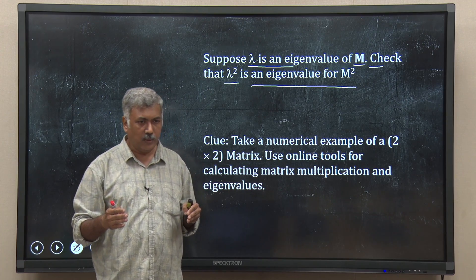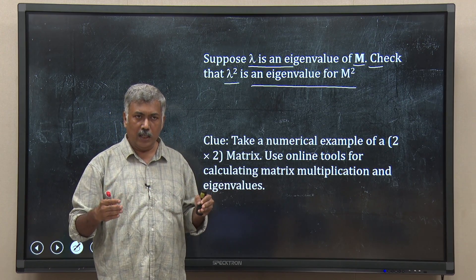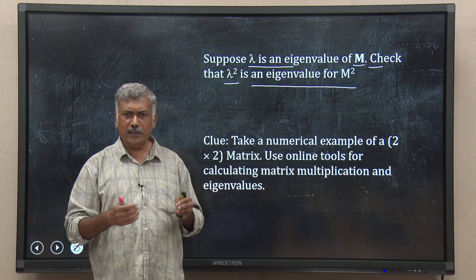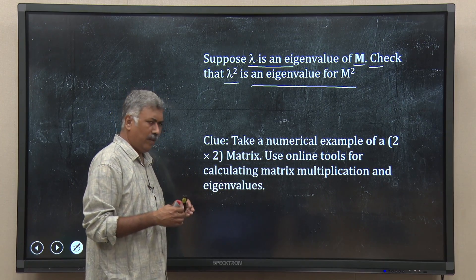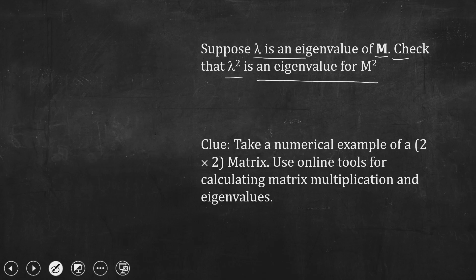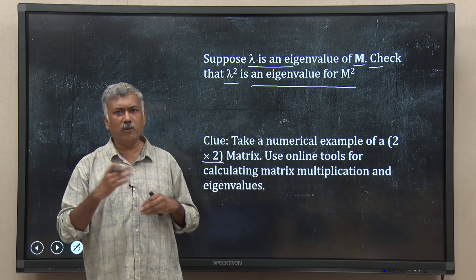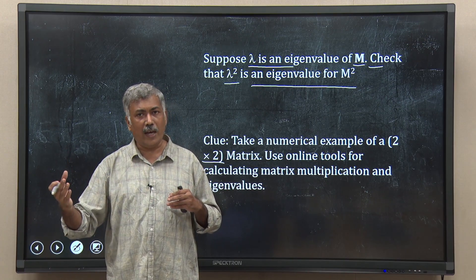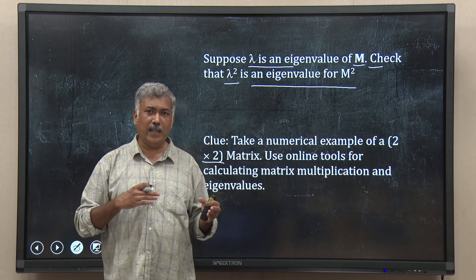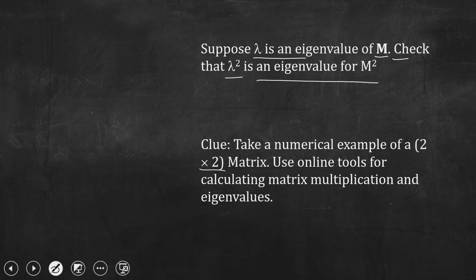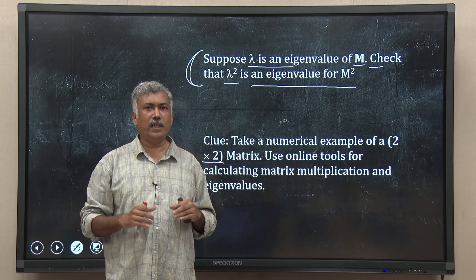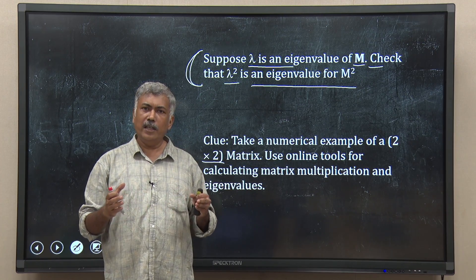How will you do it? This is not a mathematics course on linear algebra, so you do not need to make an analytical proof. Take a small 2×2 matrix with reasonable numbers like 1, 2, 5, 10. Use online tools to do matrix multiplication and calculate eigenvalues and eigenvectors for M and M squared, then check whether this property holds for your example. We will meet again in the next lecture to discuss new topics of linear algebra useful for data analysis. Till then, happy learning.